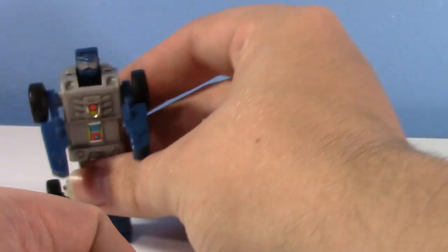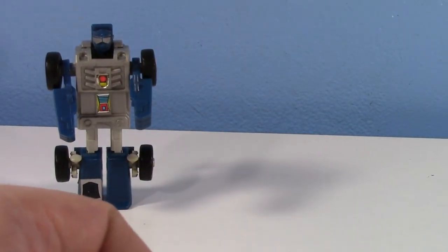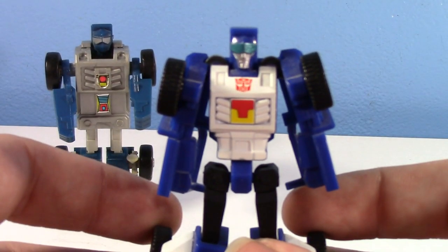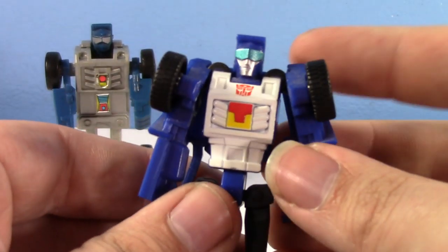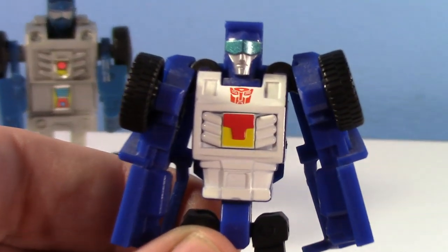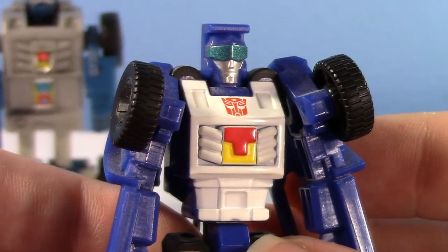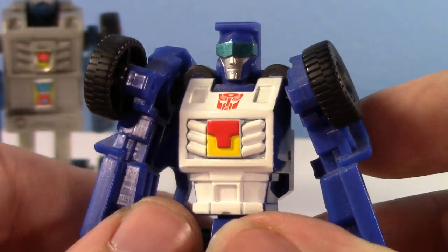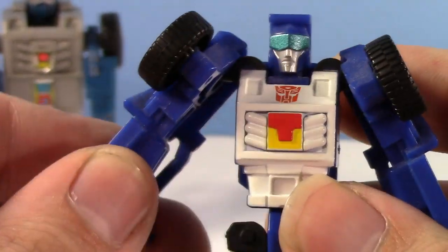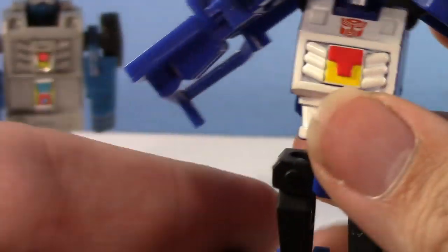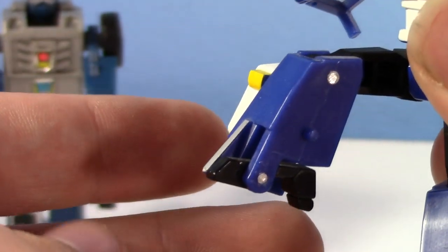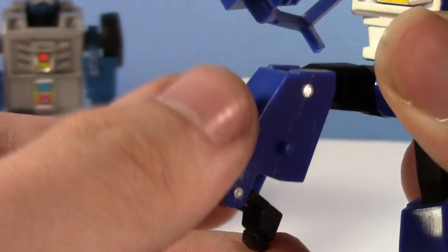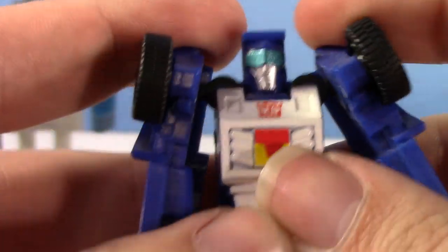Let's set him there and let's talk about the Universe one, which is basically the same thing but more articulated, I'm not even joking. So the sculpt on this is a little more faithful to Beachcomber in the G1 cartoon even though he has a silver face and he really shouldn't. But yeah, he's got some more articulation. He's got ball joints in the arms now as well as hinges, you can move the legs and you can also bend the knees and they actually work this time. And you also kind of have an ankle.